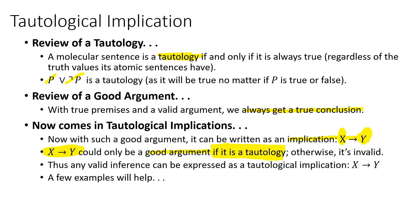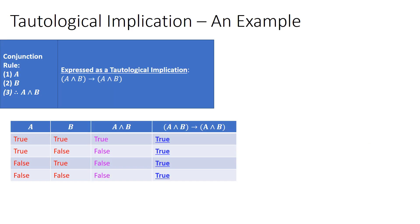Here we have an example using the conjunction rule. The first premise is A, the second premise is B, and then we conclude, therefore, A and B. Our goal is to make a tautological implication and then do a truth table to find out if it always ends up having the value of being true. If it does, it's a tautology, and we can thereby conclude it's a good argument. If it's not a tautology — if we have one false value — then the argument must be bad, invalid.